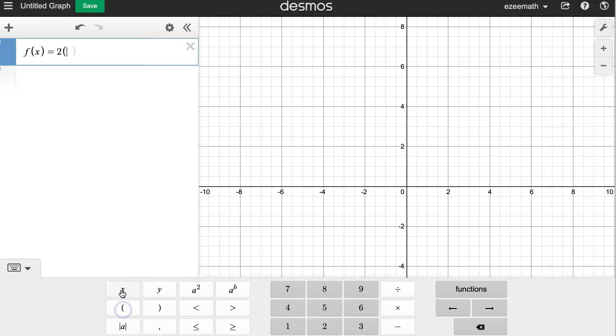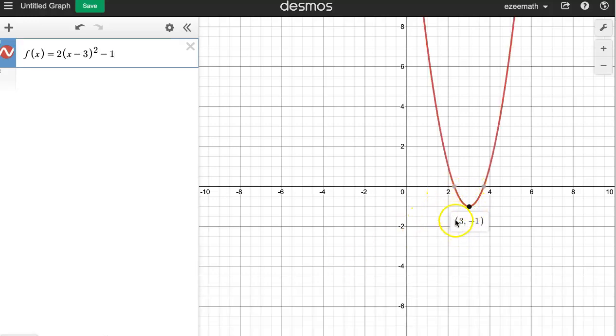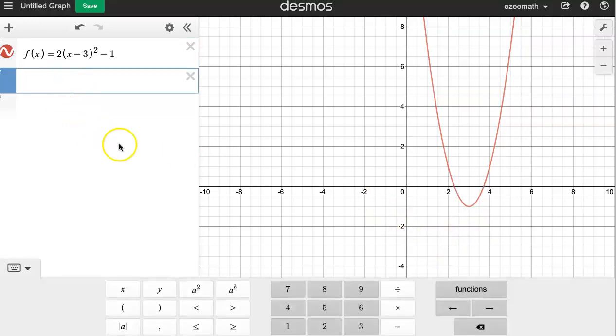So you have this function here, right? The vertex is at (3, -1). Now the new function is f(x+6), so let me type it in.